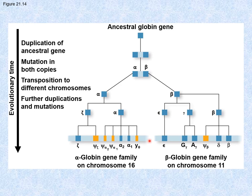Over time, mutations change the sequences, allowing slightly different functions. Fetal hemoglobin — the gamma globin — has evolved to attract oxygen more strongly, giving it a higher affinity for oxygen. This has an evolutionary benefit: the fetus must obtain oxygen from the mother, so the mother's hemoglobin can't hold onto oxygen too tightly — it needs to let it go. The fetal hemoglobin grabs onto that oxygen, allowing more efficient transfer from mother to fetus. So gamma globin has evolved for improved oxygen transfer efficiency.